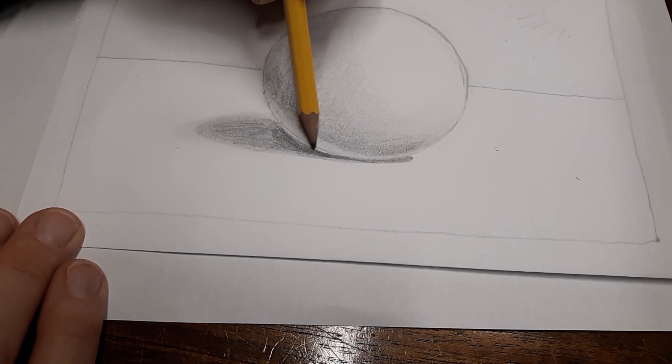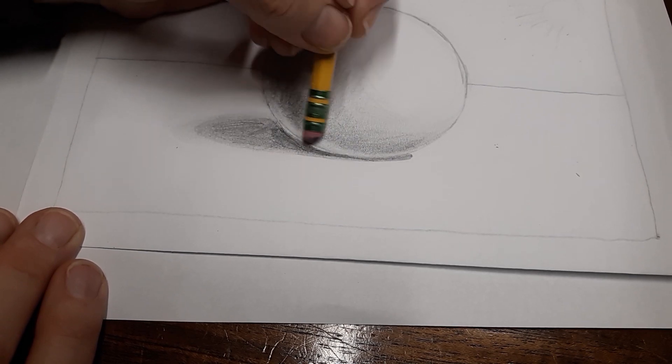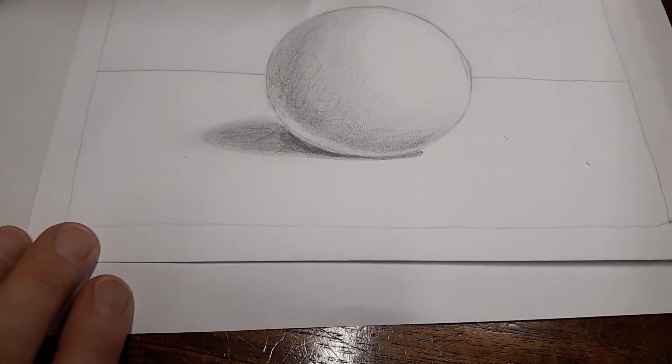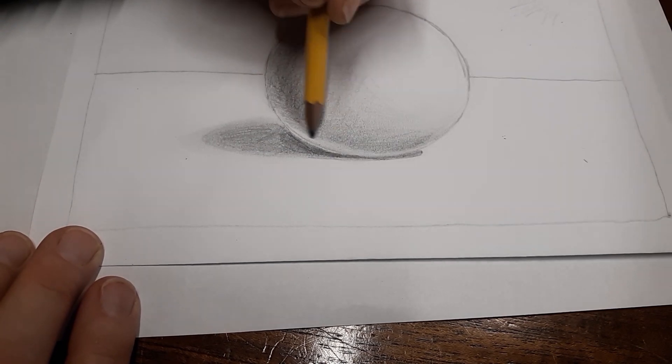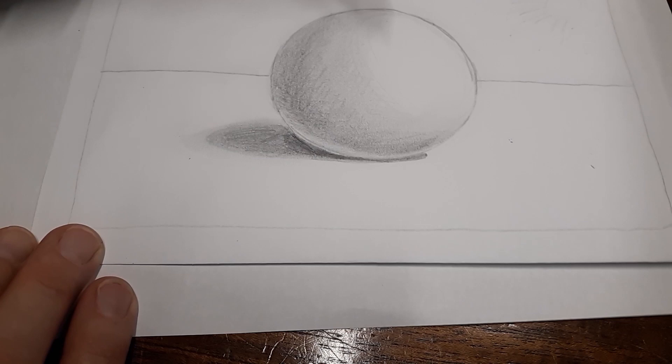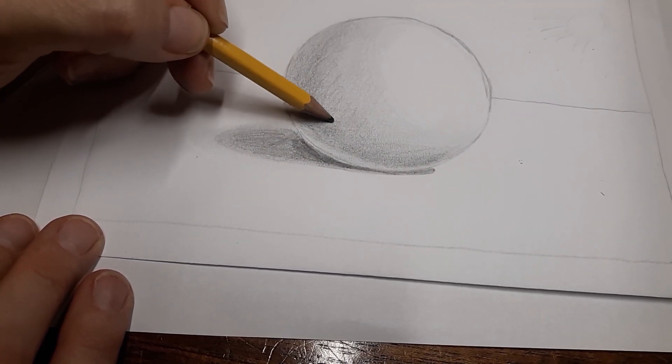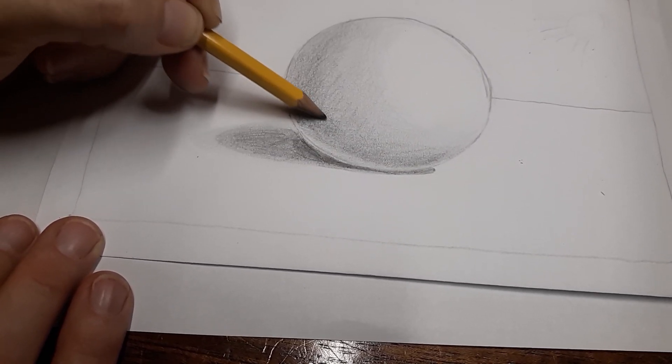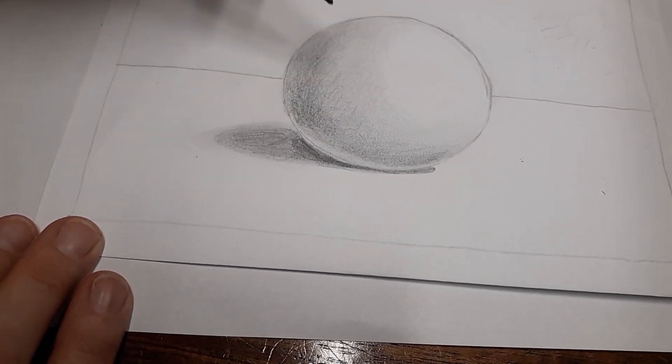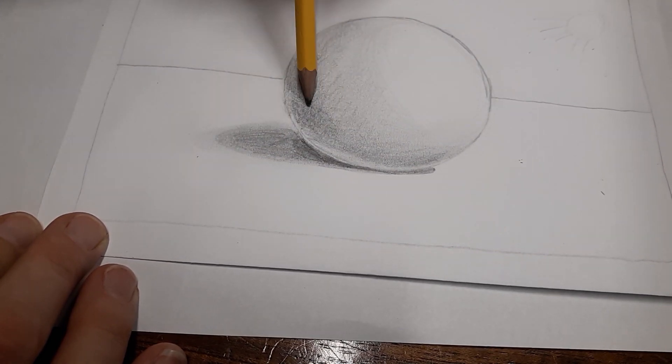And then just darken it a little bit so it doesn't look too bright. Smooth it out. It takes a little bit of practice, but that's okay. You have four sides of paper so you can do this. And this mostly is, it's mostly the darkest on the back side of the ball. So kind of right opposite where that, where the reflection is, is right about where the core of the shadow is the darkest. So right here, the furthest part away from the light, you have the darkest part of the shadow.